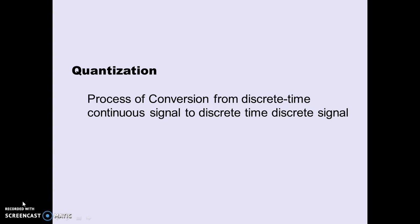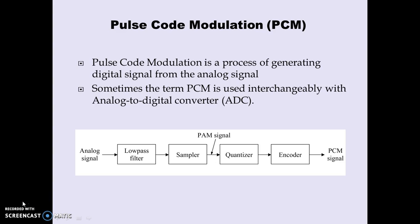Each discrete level will be renamed with some digitized code, and that digitized code will actually be transmitted — this is a conversion to a discrete-time digital signal. Quantization is a middle process of the entire system called pulse code modulation (PCM), which is the process of generating a digital signal from an analog signal.